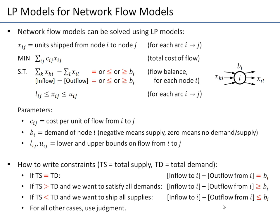In many cases these simple assumptions won't hold. For example, one node might receive at most 50 cars while another should receive exactly 30. You have to use your judgment and write constraints appropriate for each node — using equality for exact requirements and inequality for at-most or at-least cases. In general, use judgment regarding the sign, but the format always follows inflow minus outflow compared to bi.